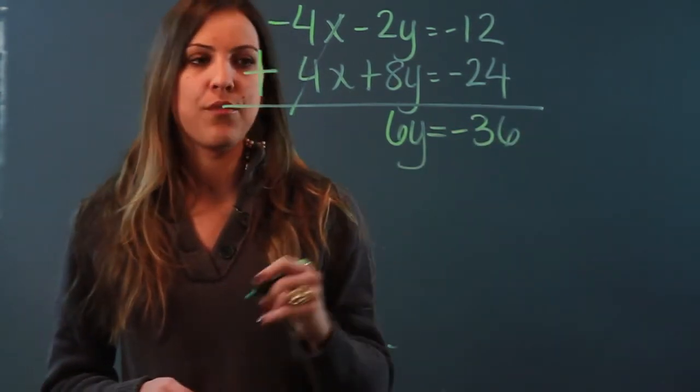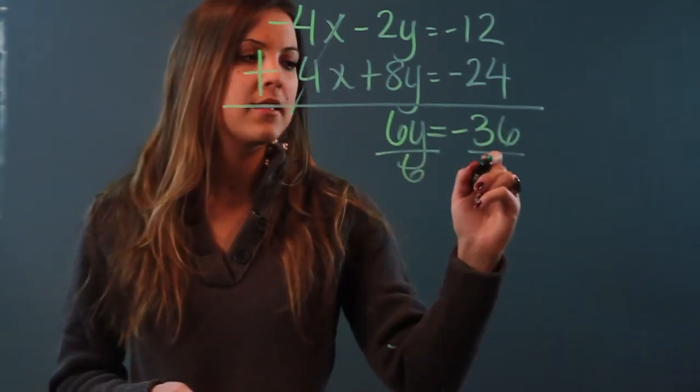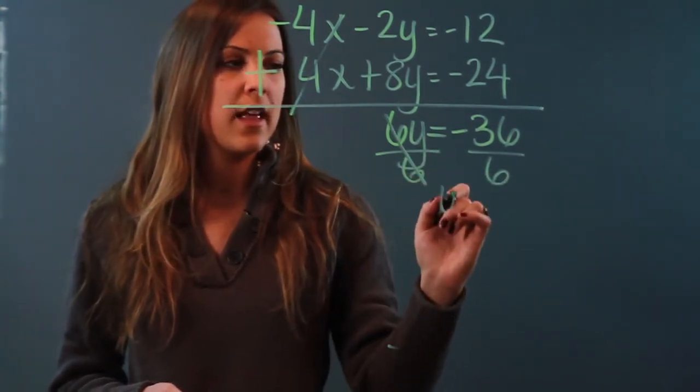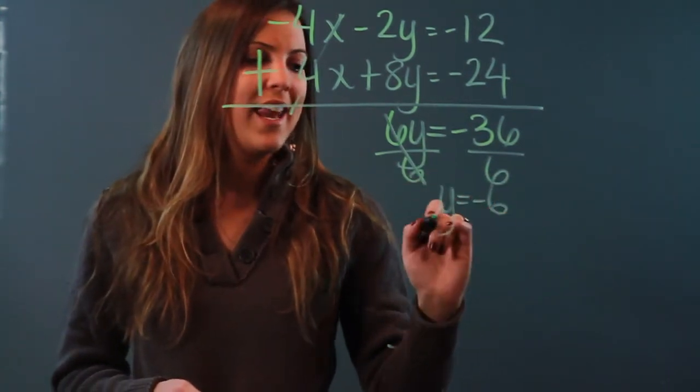Now I just have to solve for y so I'm going to divide both sides by 6. When I do that these cancel out and I get y equals negative 6.